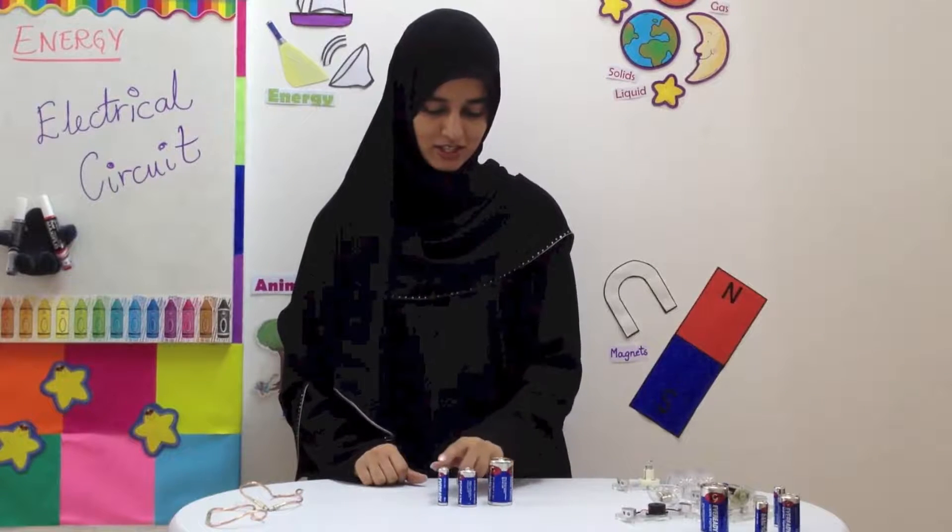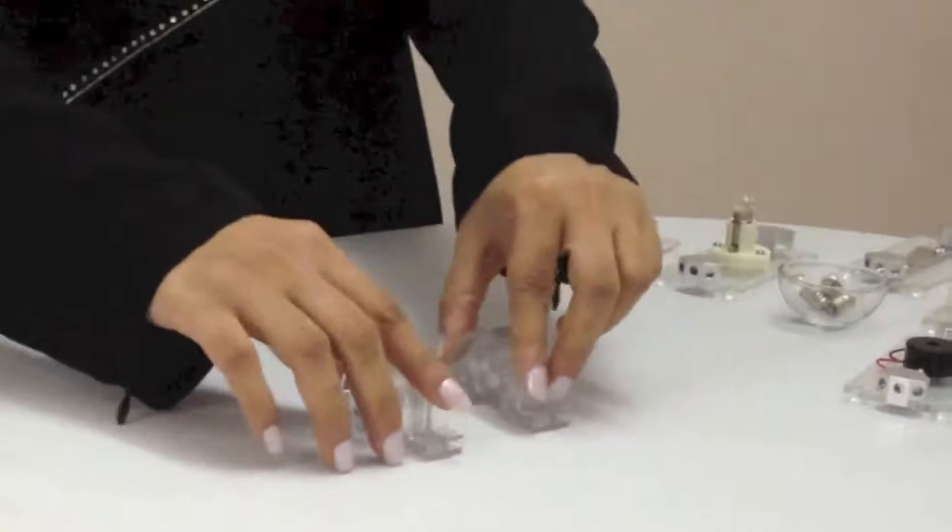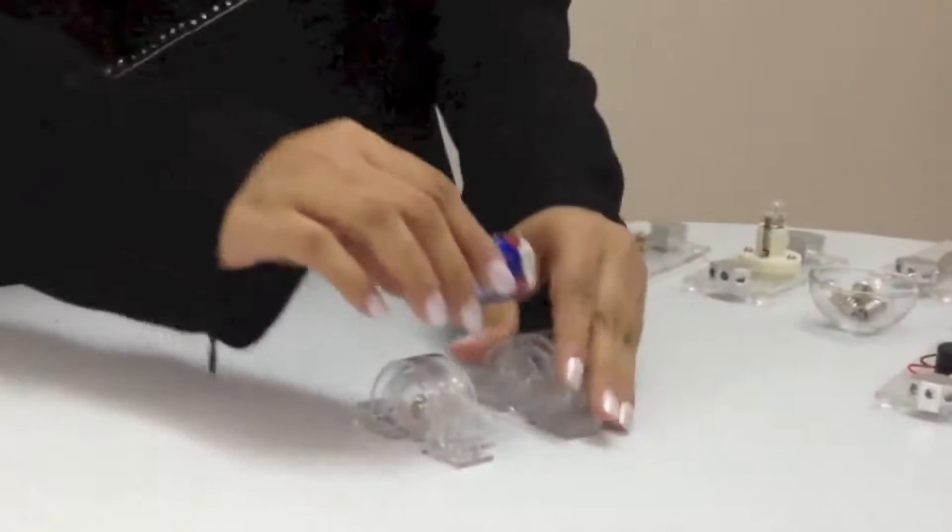Here we have three size batteries. Now let's make an electrical circuit. I put a battery holder in this area and fix it in place.